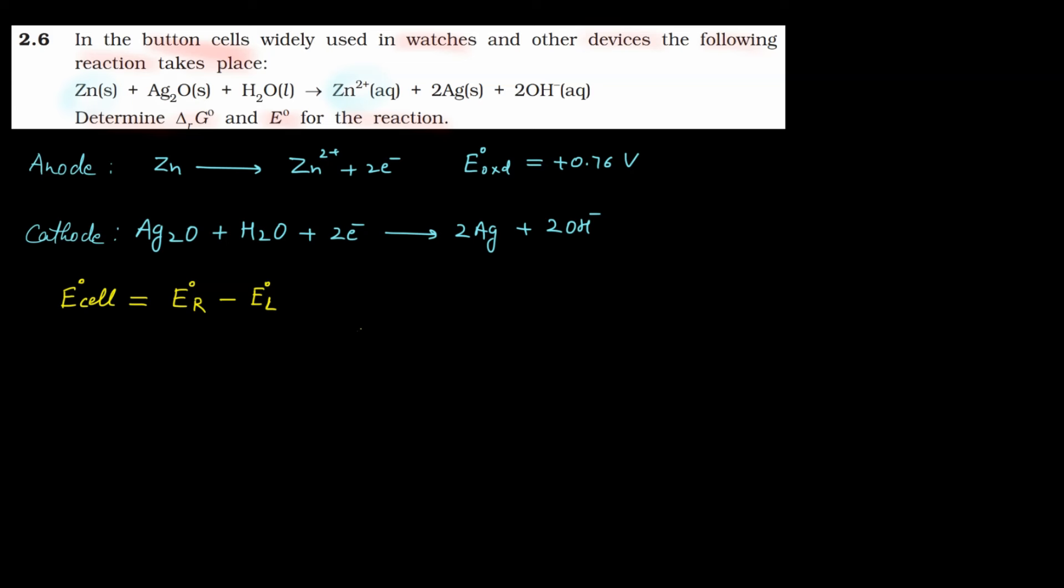Now the E° anode is given to you, but for the reaction happening at cathode, the E° value is not given in the question. Until you know this E° value, we cannot solve this question. So the E° value should be given to you, which is 0.34 volts. Only if this value is given can we solve this question further.